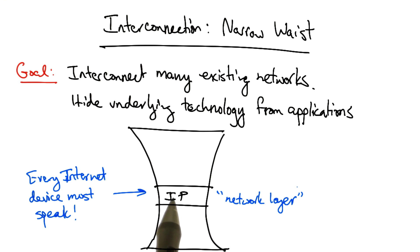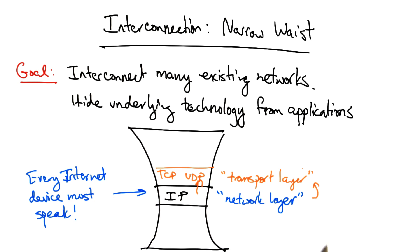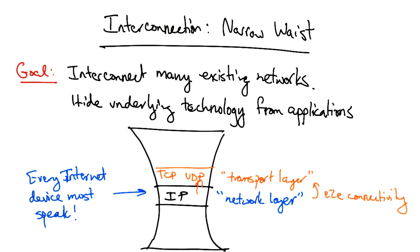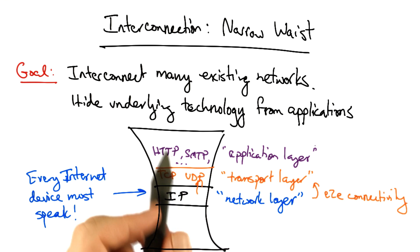The network layer provides guarantees to the layers above. On top of the network layer sits the transport layer. The transport layer includes protocols like TCP and UDP. The network layer provides certain guarantees to the transport layer. One of those guarantees is end-to-end connectivity. For example, if a host has an IP address, then the network layer, or IP, provides the guarantee that a packet with that host's destination IP address should reach the destination with best effort.